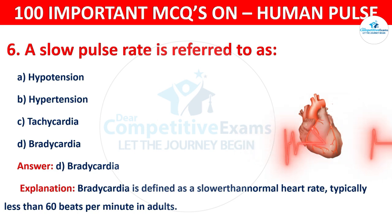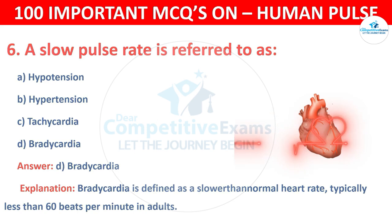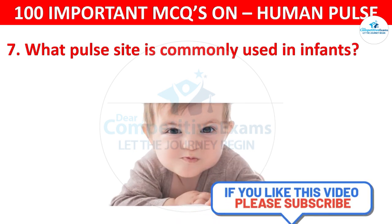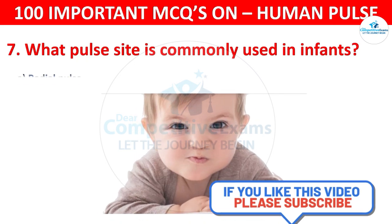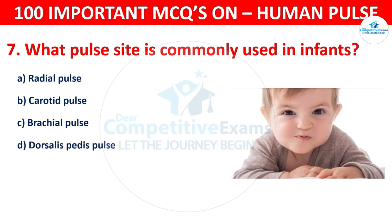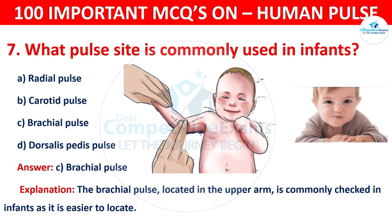Question number 7: What pulse site is commonly used in infants? Your options are: Radial pulse, Carotid pulse, Brachial pulse, or Dorsalis pedis pulse. The correct answer is C, that is Brachial pulse. The brachial pulse, located in the upper arm, is commonly checked in infants as it is easier to locate.